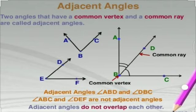So angle ABC and DEF are not adjacent angles. Now see the next pair: angle ABD and angle DBC. Here, the two pairs of angles share a common vertex B, a common ray BD, and different interiors. So yes, ABD and DBC are pairs of adjacent angles.